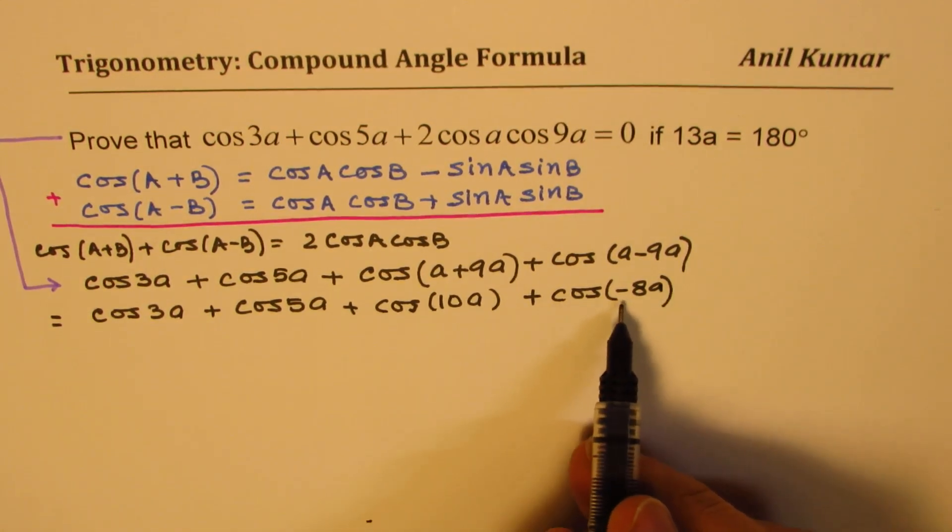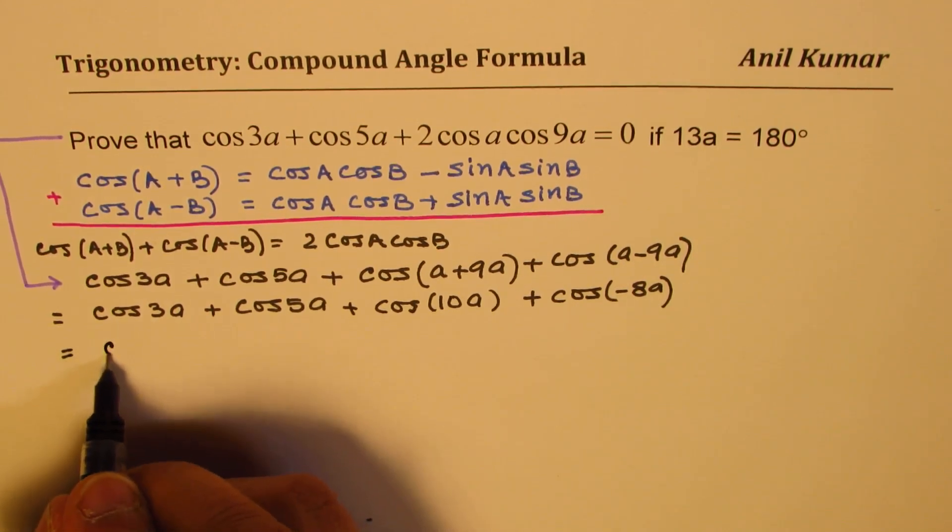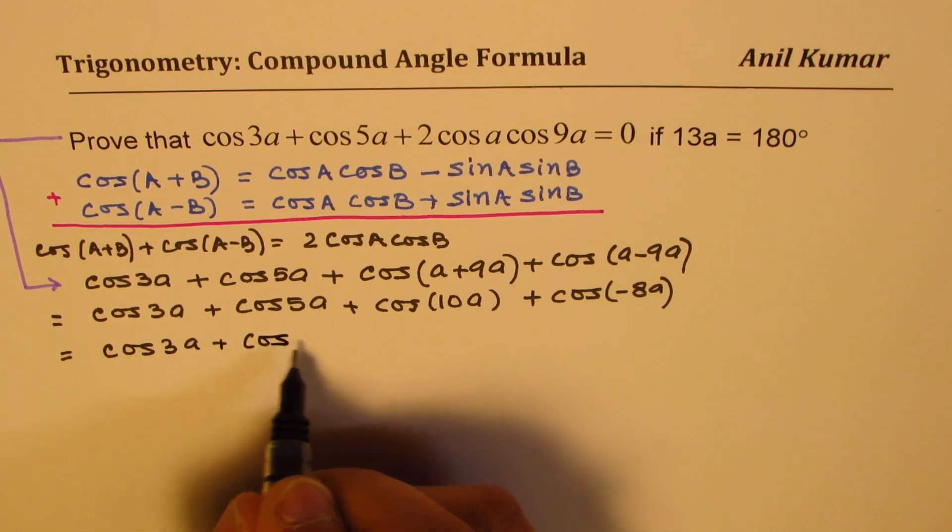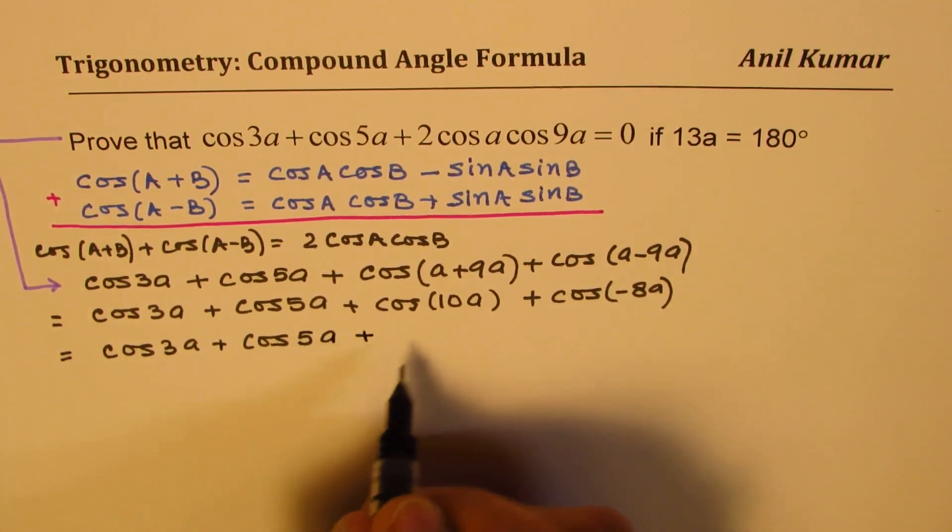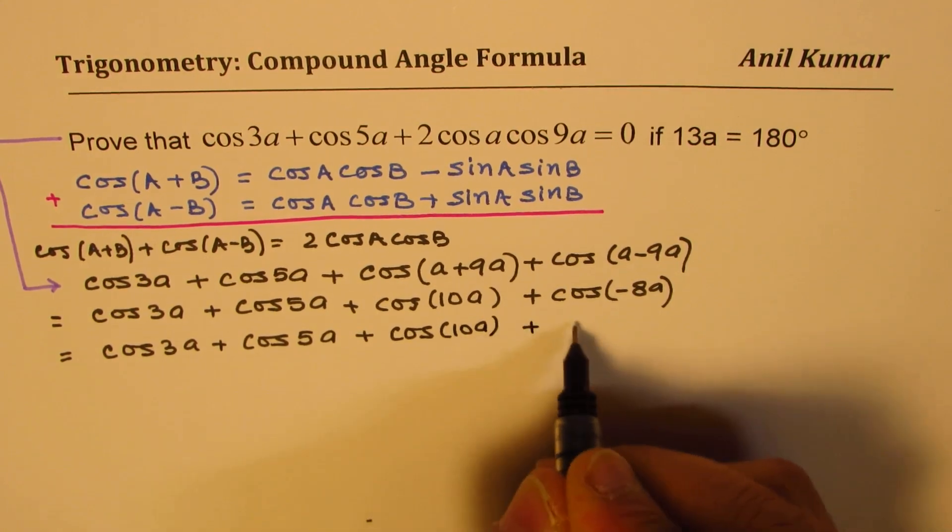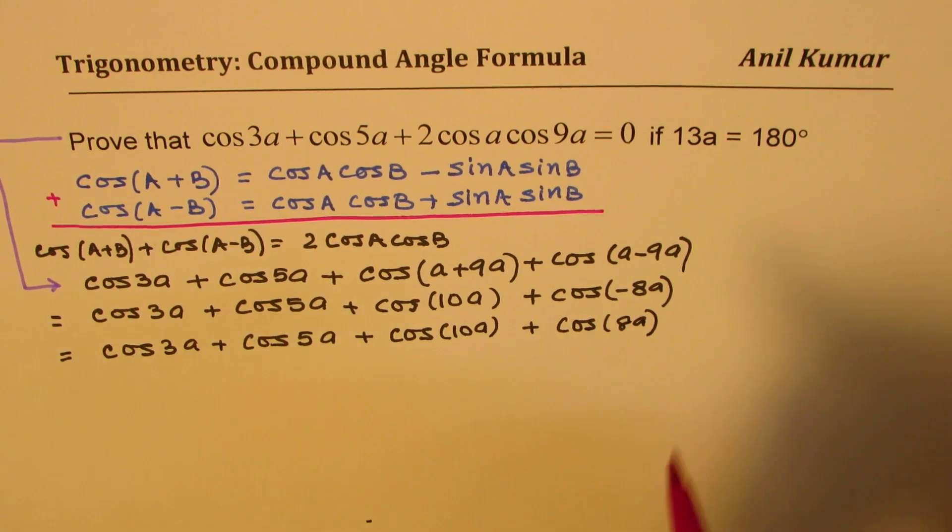And here we get cos of minus 8a. Now cos of minus 8a is also cos 8a, cos is an even function. So we have cos 3a plus cos 5a plus cos 10a plus cos 8a. Let's be very clear about this.